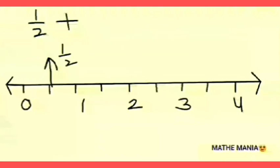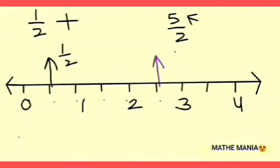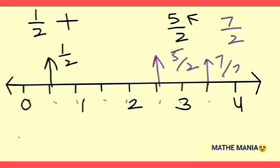We count 1, and that point represents 1/2. This number line can be used for any number with denominator 2. To represent 5/2, count 5 from the next point after 0: 1, 2, 3, 4, 5 — that point is 5/2. For 7/2, count 7: 1, 2, 3, 4, 5, 6, 7 — that point represents 7/2.